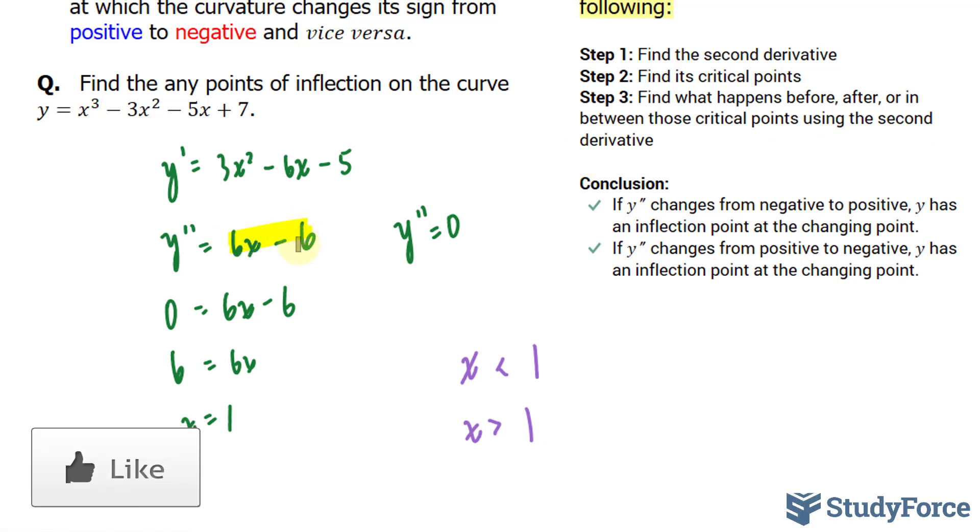If I substitute, let's say, 0 into here, I end up with a negative value. If I substitute 2 into here, I end up with a positive value. Now, how do we conclude from what we just found? If y double prime changes from negative to positive as it does, y has an inflection point at the changing point.